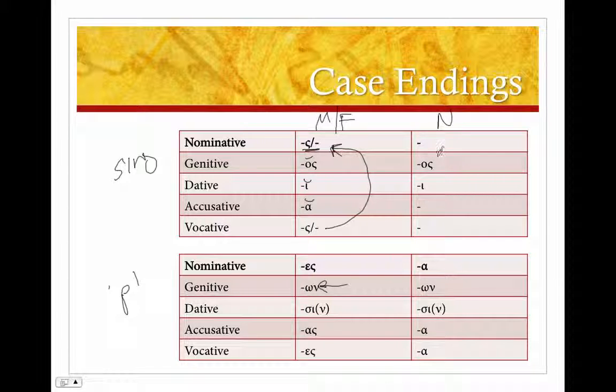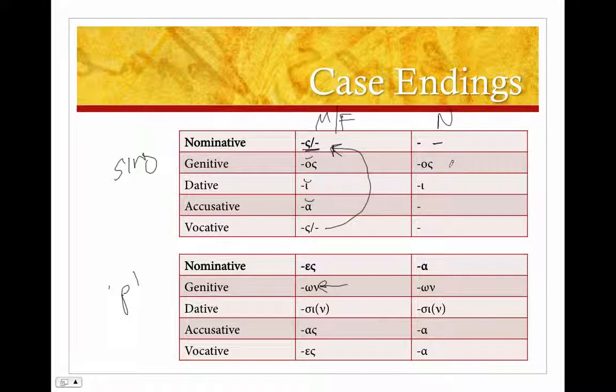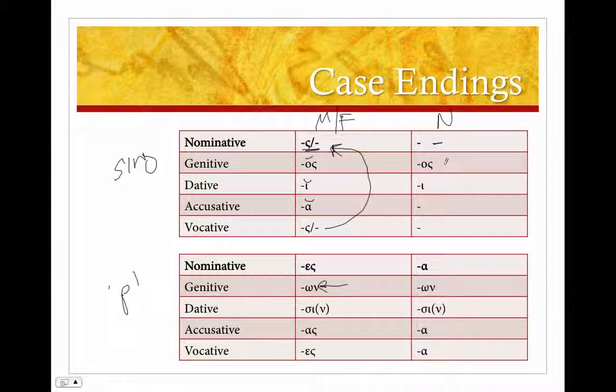And then in the neuters we've got the same, the nothing, right, the neuters. So soma, onoma. Genitive -os, it's the same. Dative -i, it's the same. Accusative, well it's not -a, it's going to be the same as the nominative neuter, right, that's rule number one about neuters. And then the vocative is also the same as the nominative.